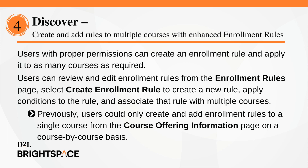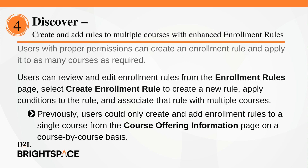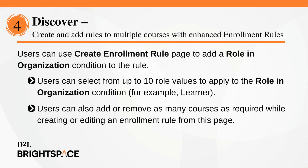Previously, users could only create and add enrollment rules to a single course from the Course Offering page on a course-by-course basis. Users can add a Role in Organization condition to the rule in the Create Enrollment Rule page, and select from up to 10 role values — for example, Learner. Users can also add or remove as many courses as required while creating or editing an enrollment rule from this page.